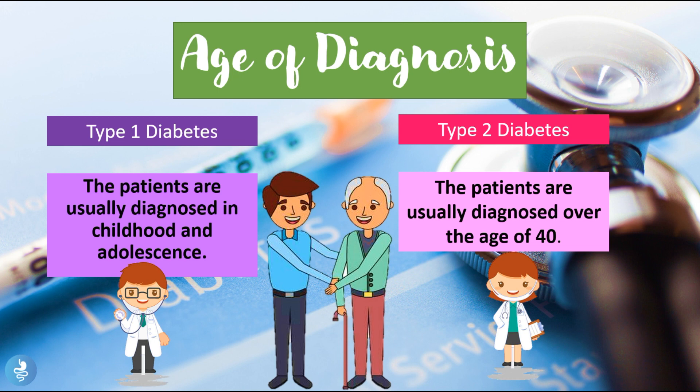Looking at the age of diagnosis: in type 1 diabetes patients are usually diagnosed in childhood and adolescence, while in type 2 diabetes patients are usually diagnosed over the age of 40.